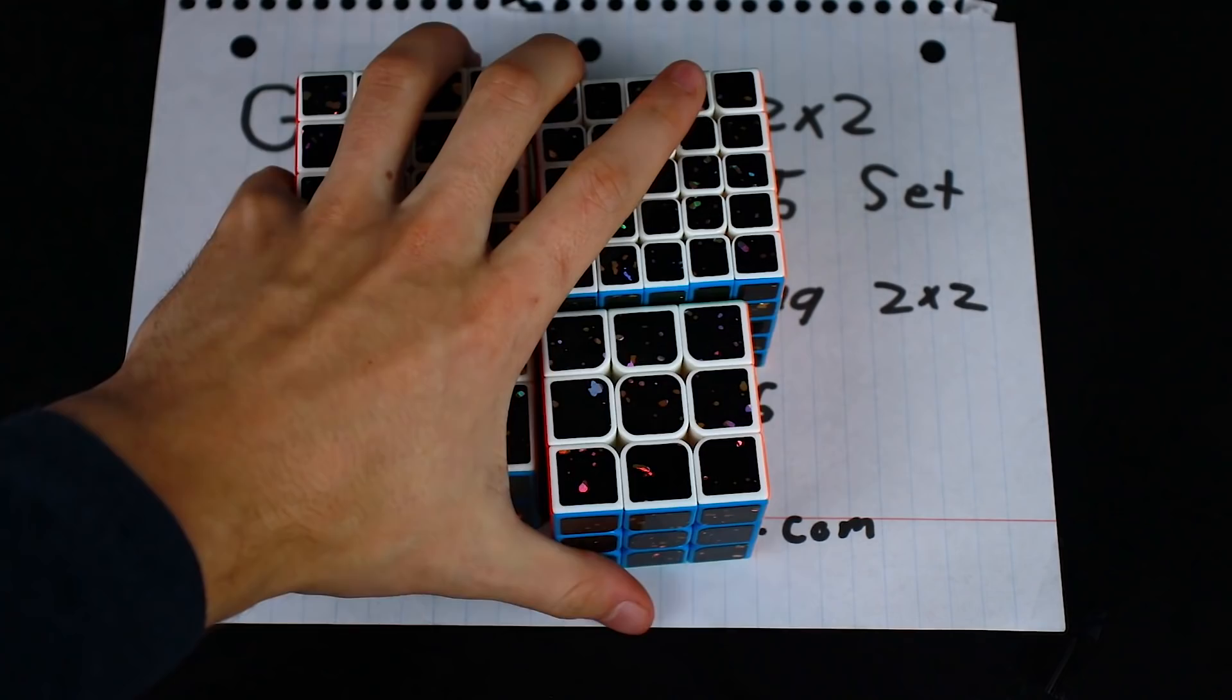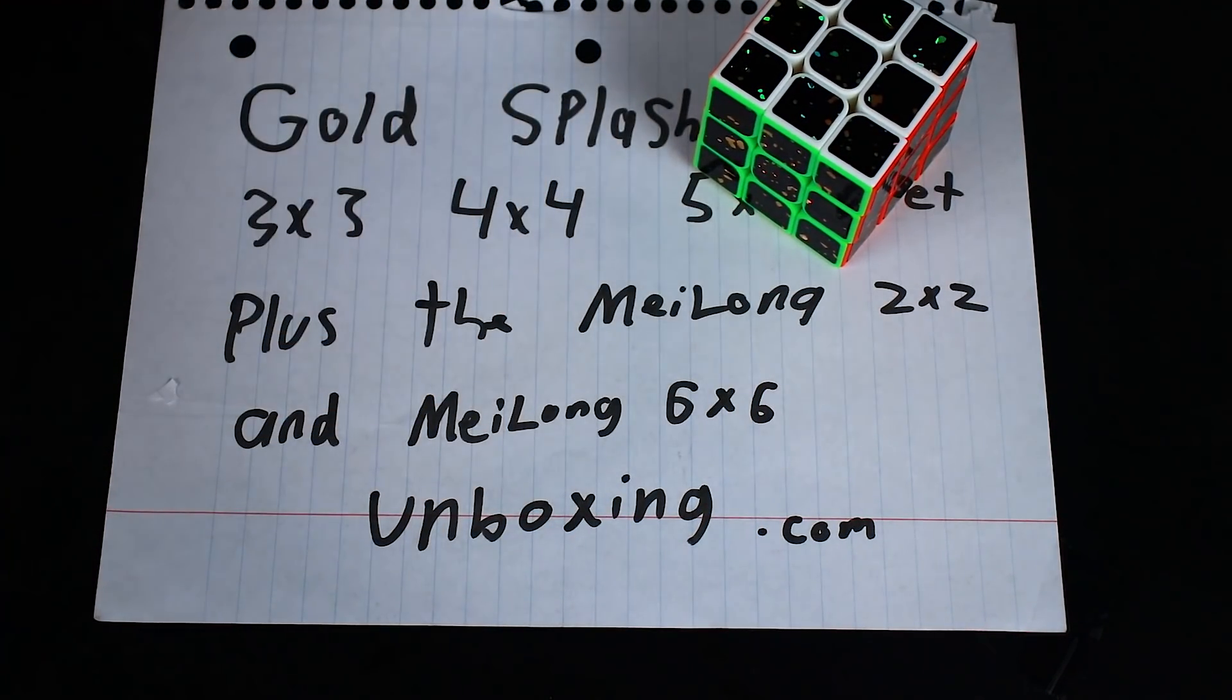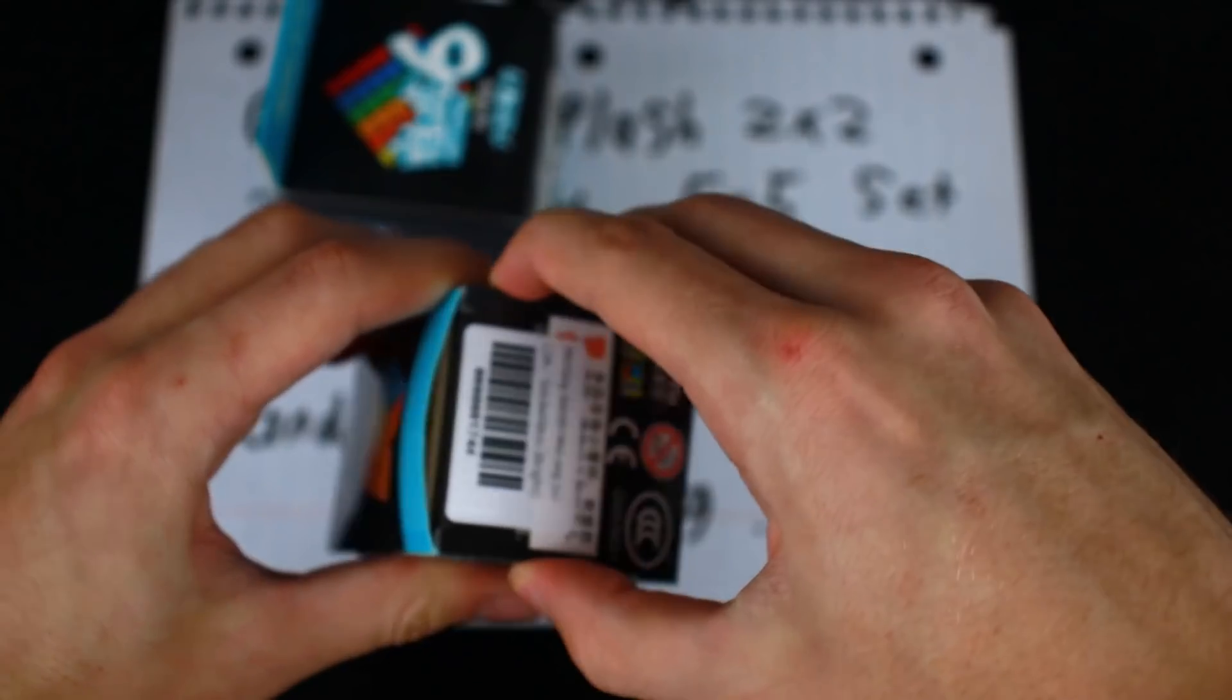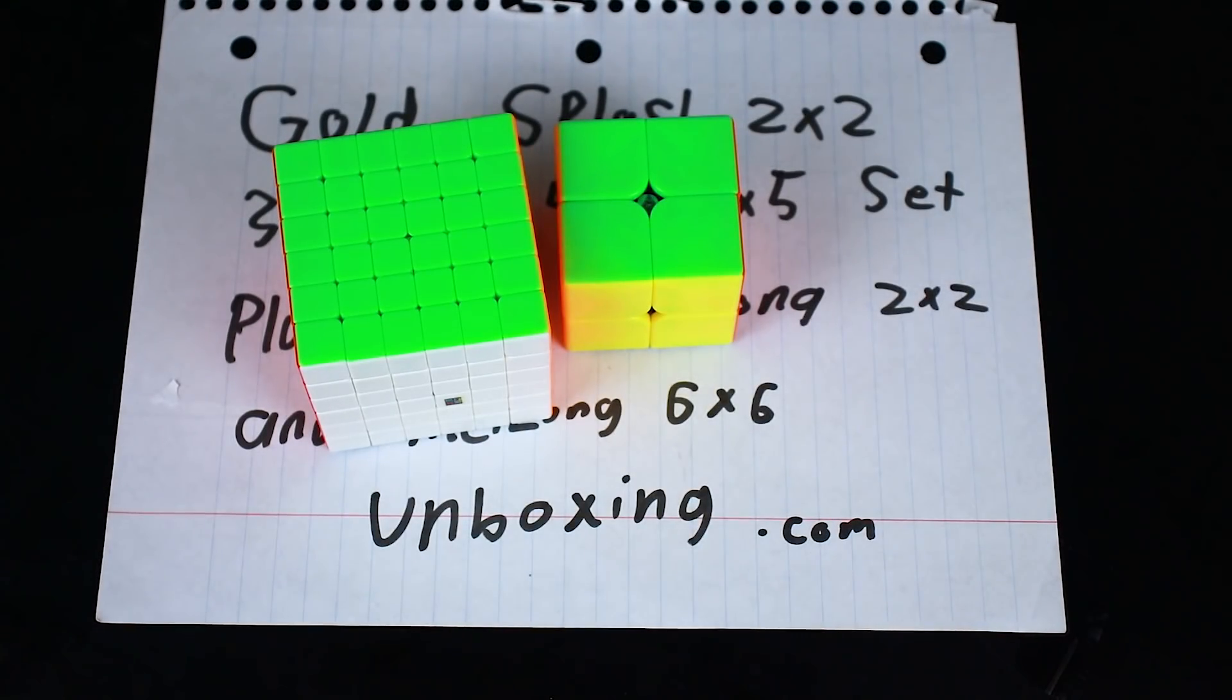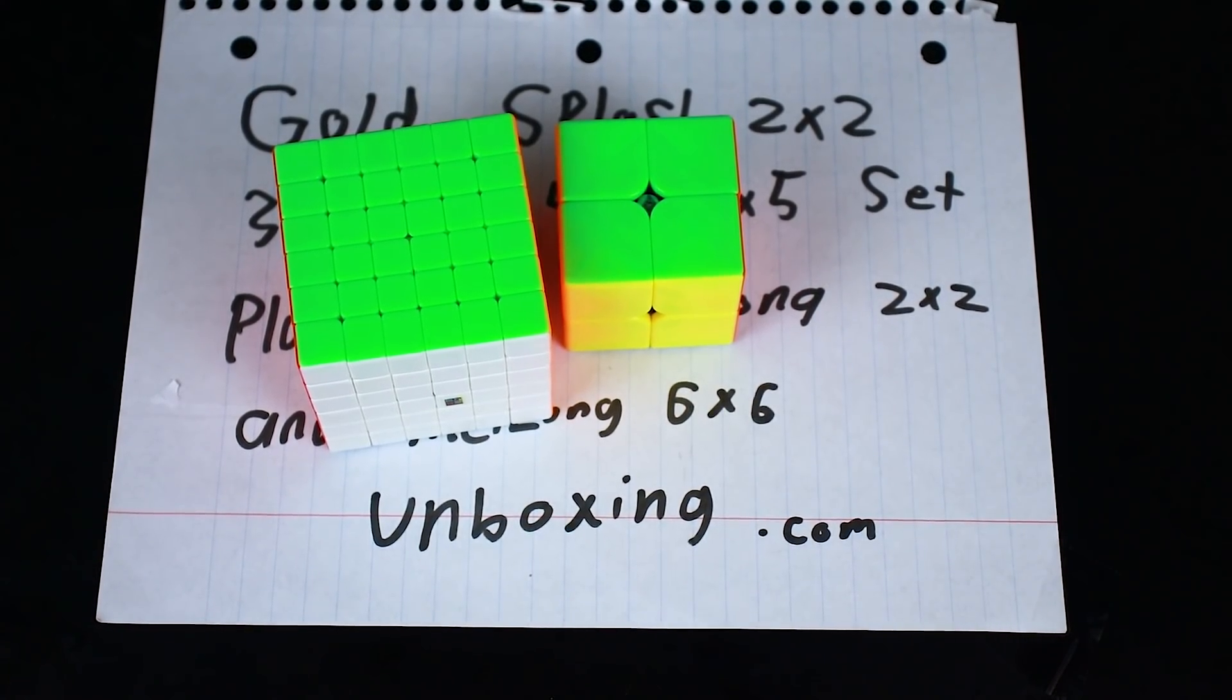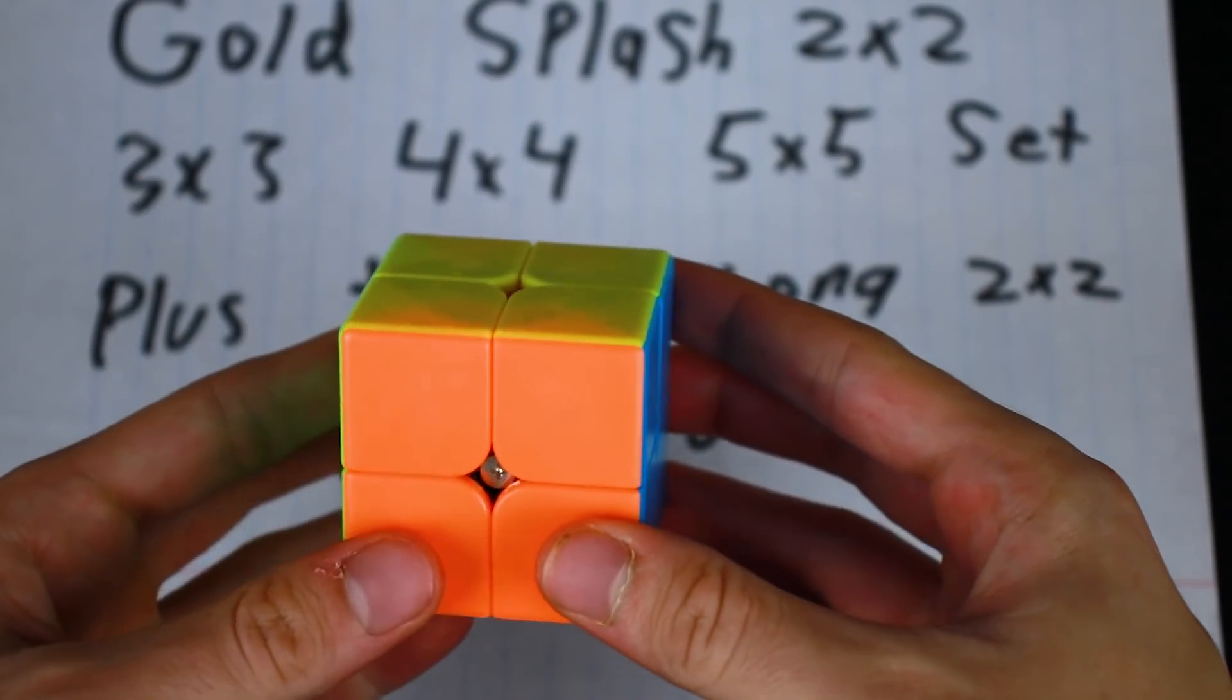Let's get on to the Meilongs. The reason I sound disappointed is that I was deceiving you. These are not made of gold. That was a lie. We'll just open these both up at the same time. 2x2, really cool. And the 6x6, nice. Here are my predictions: the 2x2 is gonna be really good, the 6x6 is gonna be pretty bad. Let's see if I'm right. 2x2, this feels very light. Let's see how it turns.